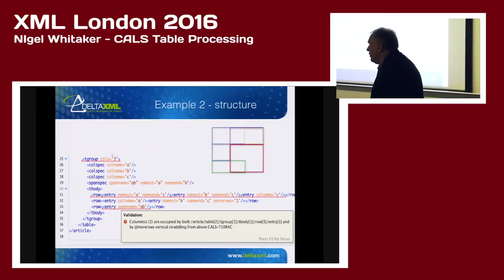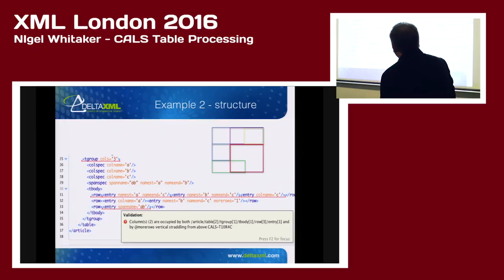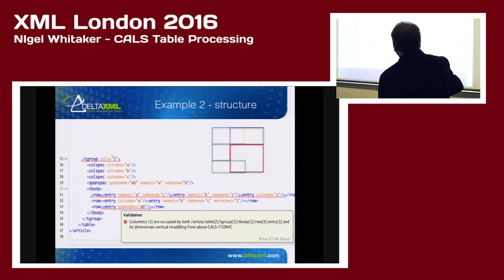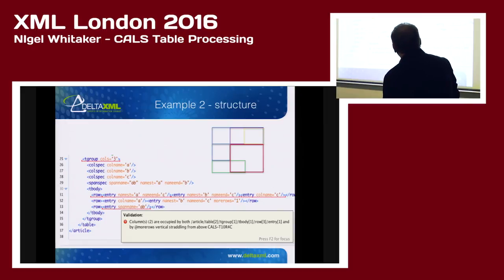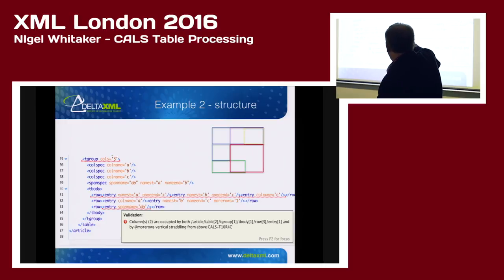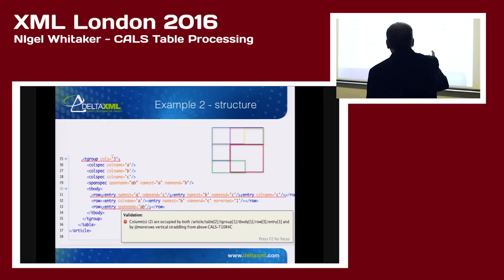Here's a slightly more complicated example of a structural issue in a CALS table. I've illustrated a screenshot from Oxygen. This is using Schematron, and it is drawing a red line on row 33 to indicate a problem with that entry. What we're trying to show is that there is overlap — that is one of the validation constraints we're concerned about. I've tried to draw a red box around the entry on the second row and a green box around the entry on the third row, and there's overlap, and that is not allowed.